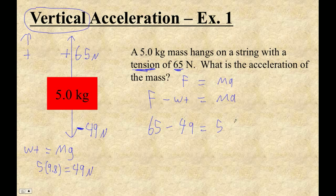And it's going to be equal to 5 times A. So 65 minus 49 is going to be 16, equals 5 times A. And then we just divide both sides by 5.